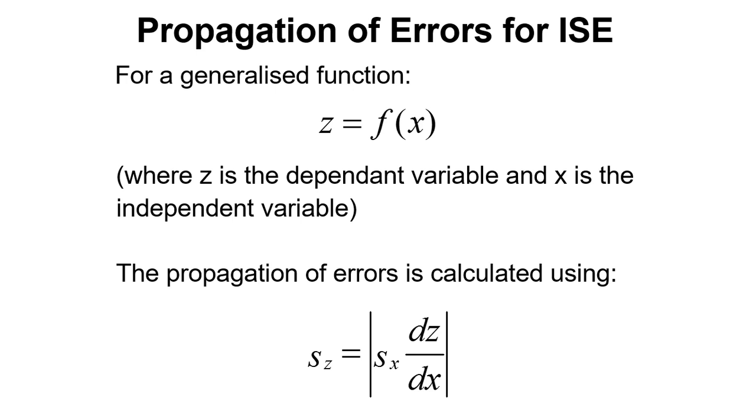If we've got a function, some function Z equals a function of X, then to get the propagation of errors, to get the error in Z, we need to take the value for the error in X multiplied by the gradient for the function shown here.